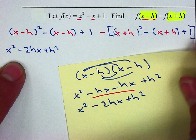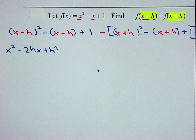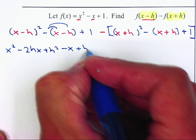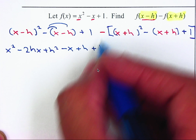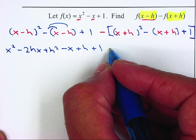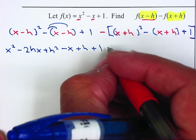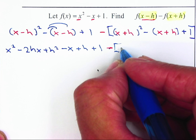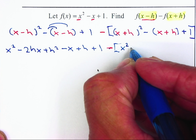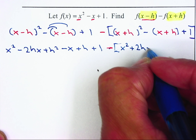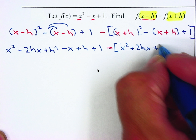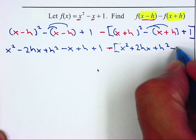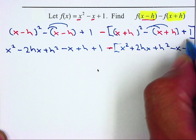Most of you can do it in one step. Now I'm going to distribute the negative: negative x plus h plus one. I'll simplify the x plus h squared first and then take care of the negative afterwards. Multiplying x plus h squared gives x squared plus 2hx plus h squared, then distribute the negative: minus x minus h plus one.